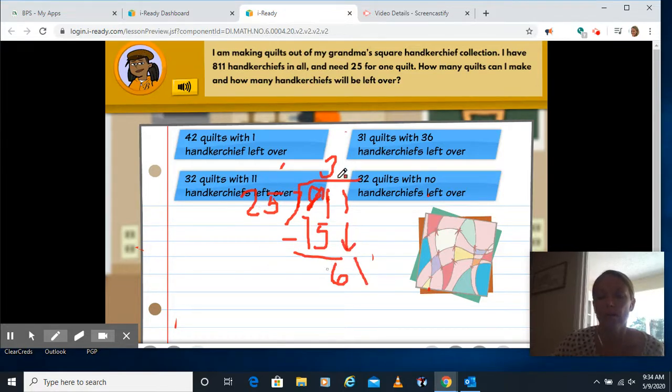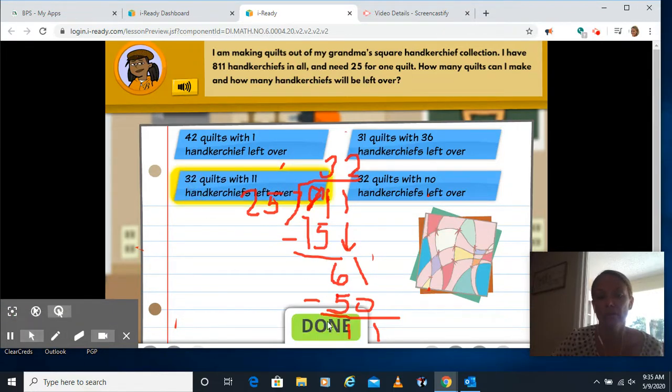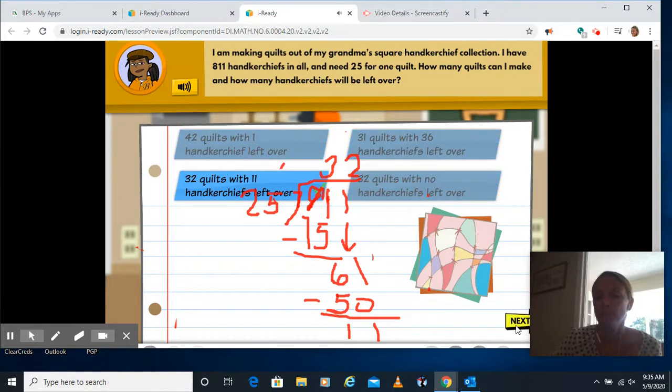Well, I know 25 can only go into 61 twice because two quarters is 50 cents. And then 61 take away 50, one take away zero, six take away five. We have 32 quilts with the remainder of 11. So that's over here, 32 with 11 left over. Click next.